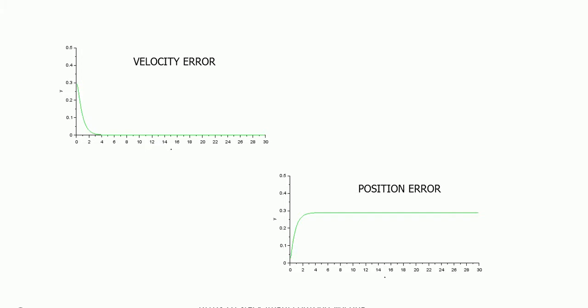For this simple example, we have shown that theoretically we should expect, in the best of the cases, an offset in any position measurement using an accelerometer. This offset is not constant, it depends on the dynamical conditions of the system, which change every time.